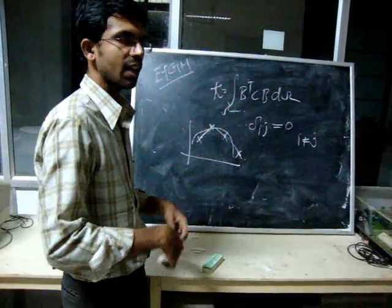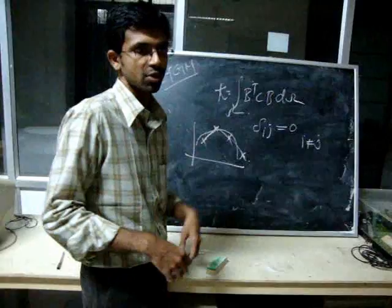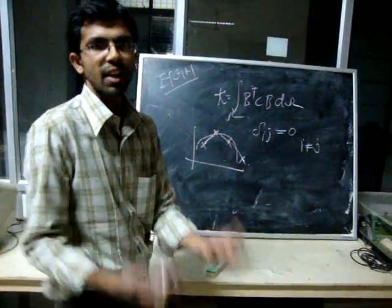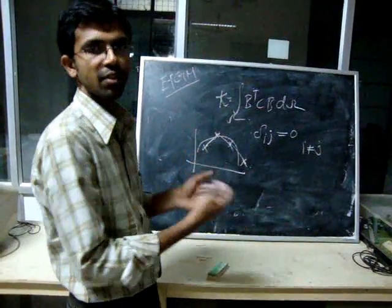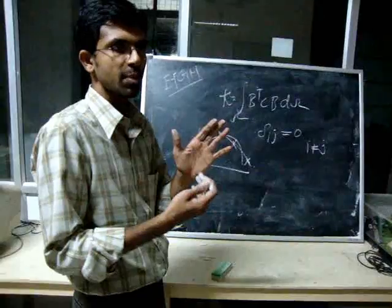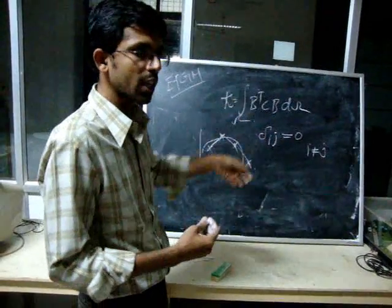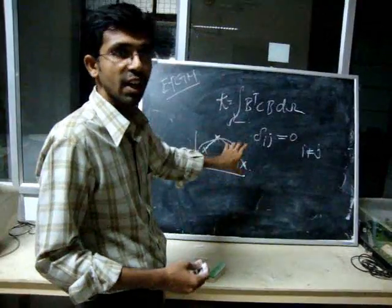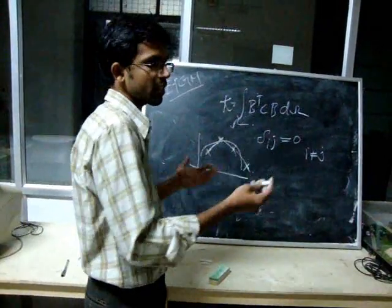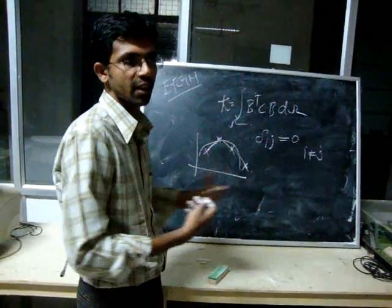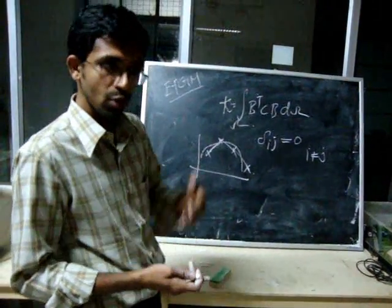Because the shape functions do not satisfy the Kronecker delta property, I cannot impose boundary conditions directly. To impose boundary conditions in the Element Free Galerkin method, I need Lagrange multipliers. The problem with Lagrange multipliers is they increase the size of the stiffness matrix. Besides the nodal displacements, I also have unknown Lagrange multipliers, which are interpolated using first-order Lagrange interpolants as in the finite element method.